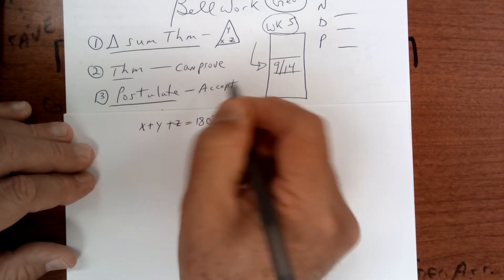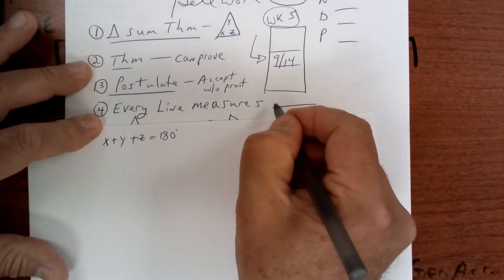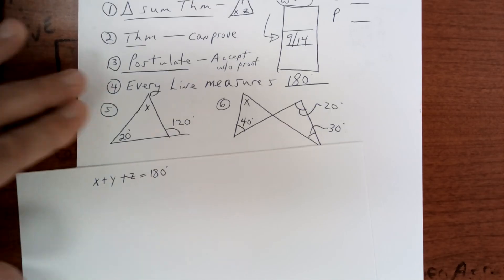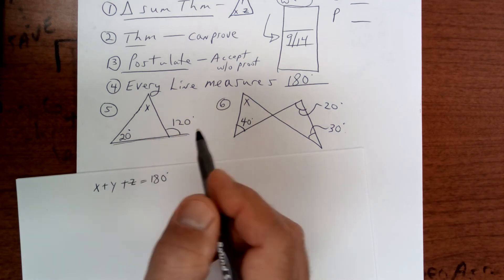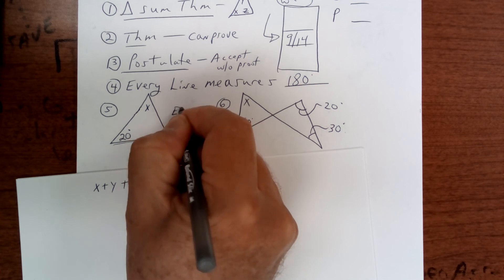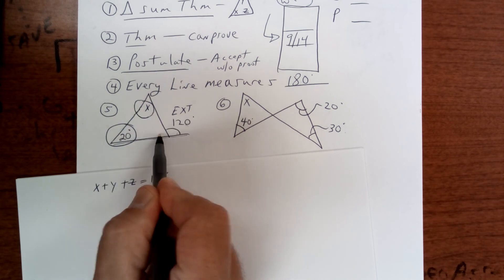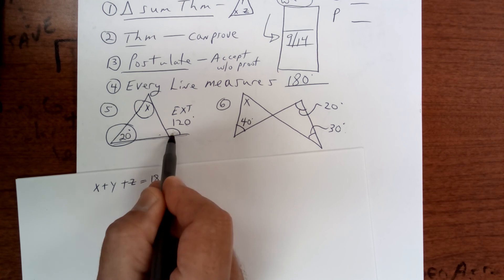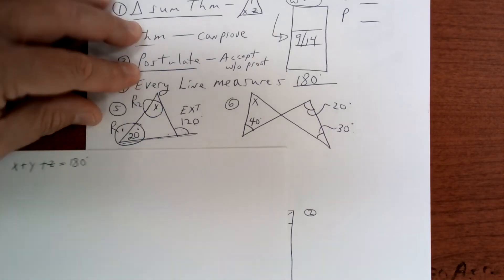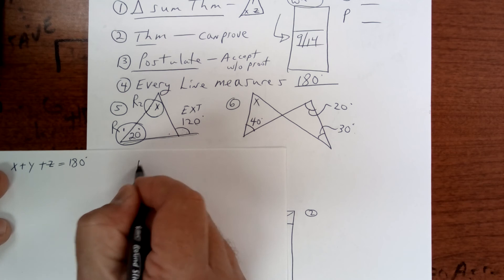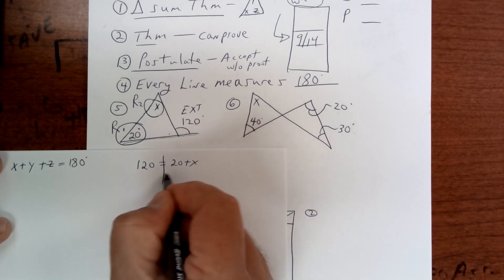Every line measures 180 degrees. Here's a line — this angle is called an exterior angle. There's a formula: the exterior angle is equal to the two remote angles. This angle is not a remote angle — it's an adjacent angle, right next to it. These two are called remote angles. The formula I didn't teach you yesterday was: exterior angle equals remote plus remote.